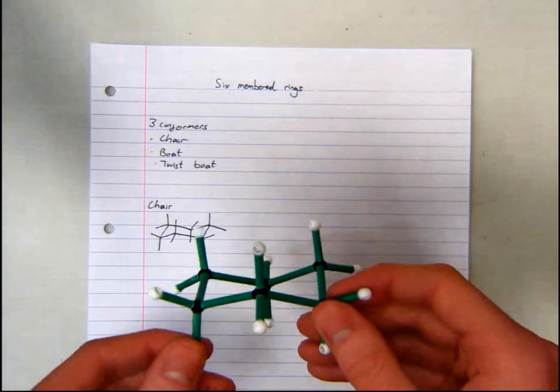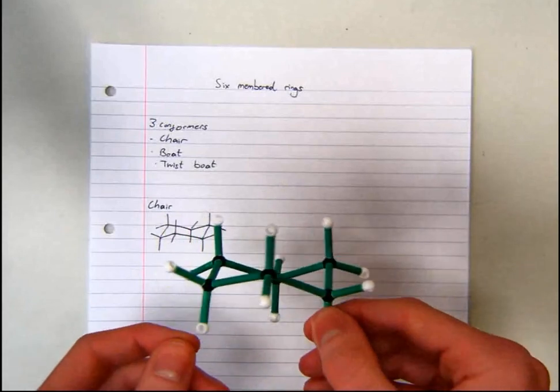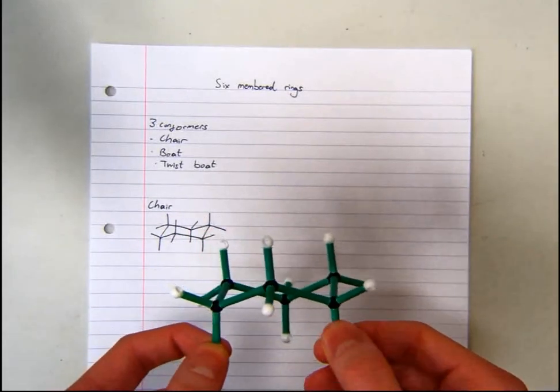This is what a three-dimensional chair conformer looks like. As you can see, all bonds are staggered.